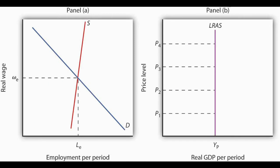In the long run, though, far ahead enough where all prices are negotiable, we should expect the economy to perform along its trend or potential output, which implies the economy will seek out equilibrium in its labor markets and, by consequence, find an equilibrium level of output, regardless of the price level in the economy.